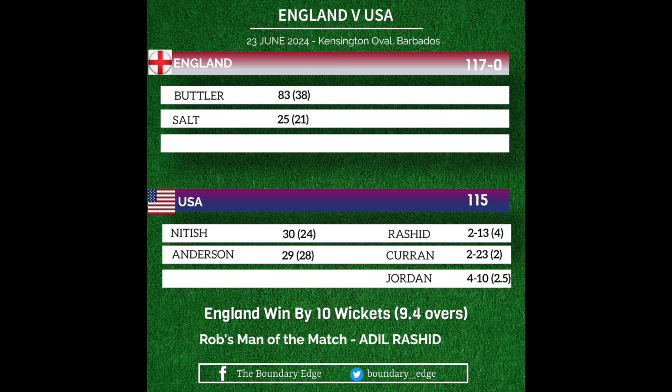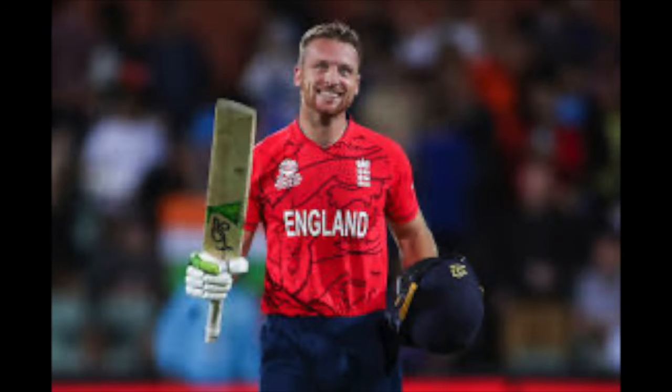England came out to bat knowing what they needed to do. They'd already calculated that if they knocked these off in no more than 18 overs and 4 balls they would automatically qualify. As it turned out, they knocked them off in 9.4 overs. The first two overs were fairly quiet — I don't think they even hit a boundary. The two openers were Phil Salt and Jos Butler, eyeing things up, and then Salt played second fiddle. He allowed Butler to hit his shots — the reverse sweep and the lofted drive over mid-on and straight. Salt finished up with just over a run a ball: 25 off 21.